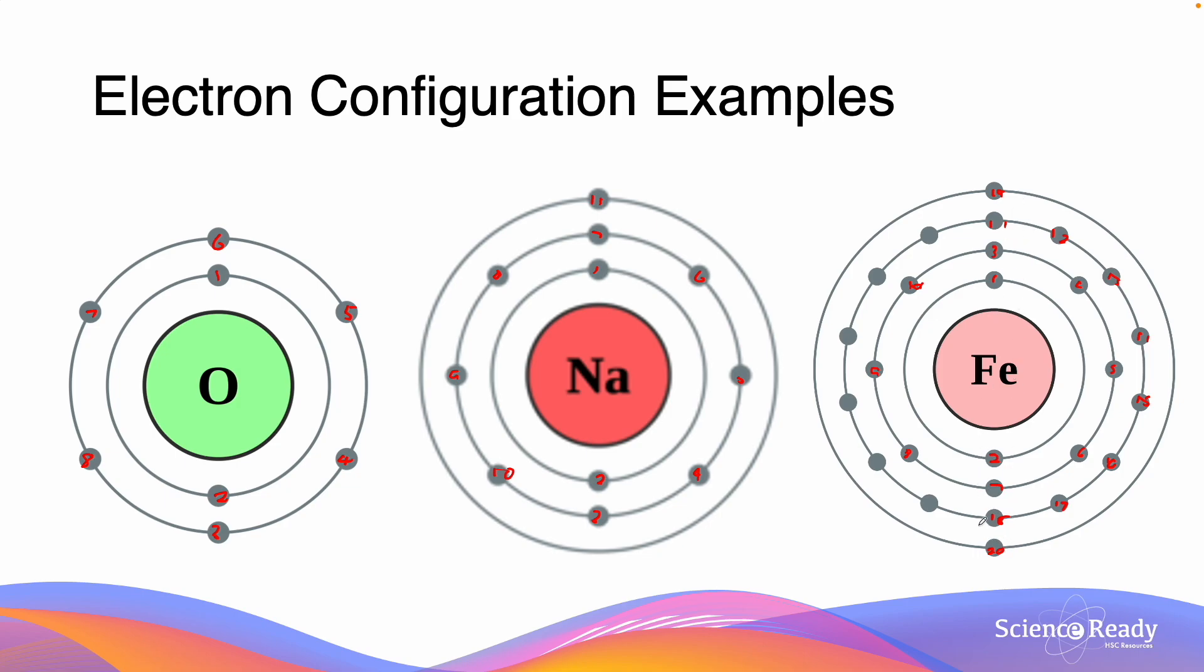Now that we've added 2 electrons into the final 4th shell, we can then go back to shell 3 to continue filling it up. So we have 26 electrons, and we have 6 electrons remaining after we've used 20. So here will be 21, 22, 23, 24, 25 and 26.